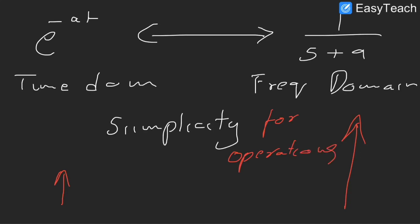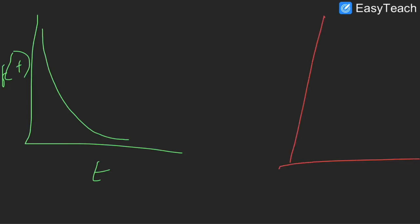So let's plot these two signals. In time domain, if you plot e to the power of minus at, it would look something like this. And in the frequency domain, the same signal if you plot, we have increasing s. F(s) is 1 over s plus a. So as s increases, the function decreases. It's pretty much linear.